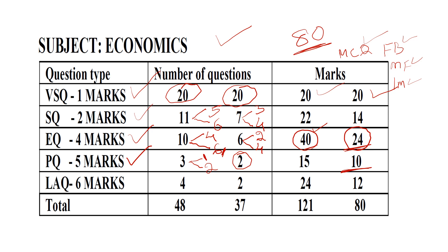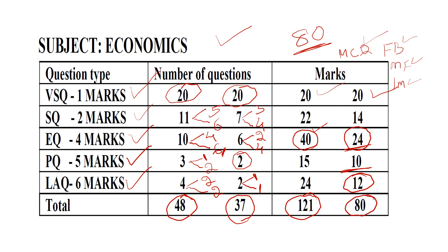So 10 marks you need to attend. Next, 4 marks and 6 marks are different sections. Seven marks — 2 marks of the mark you need to attend. So total number of questions is 48. You can answer 37 questions. Overall marks are 121. Out of 121, 80 marks will be scored.